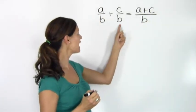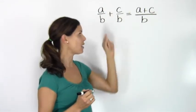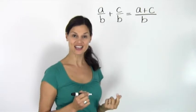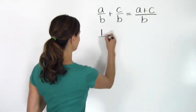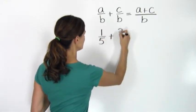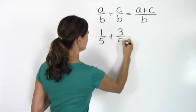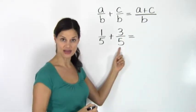The sum of these two fractions is the sum of their numerator over the common denominator. Let's look at an example using actual numbers. So if I have, for example, one fifth plus three fifths, I look here and I see that they both have a common denominator of five.